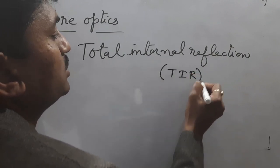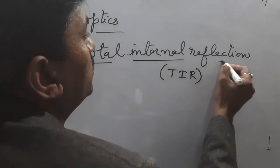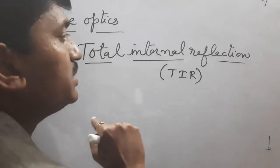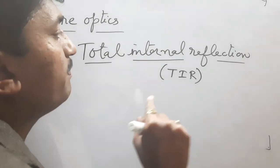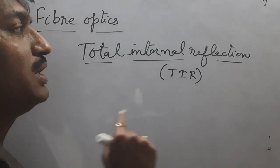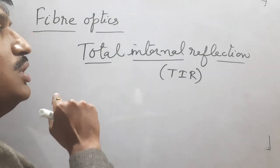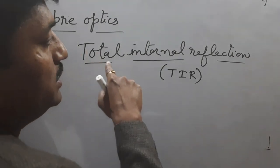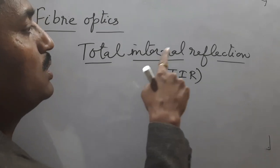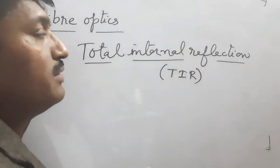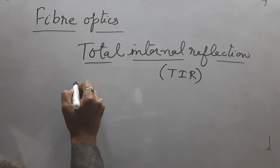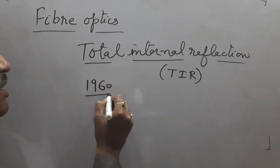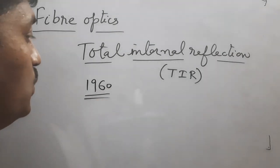The basic principle of fiber optics is total internal reflection. When light passes through the transparent fiber material — glass material — it passes from one end to another end of the fiber by the help of this principle, that is total internal reflection.